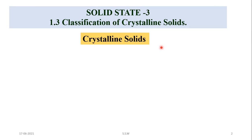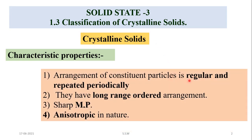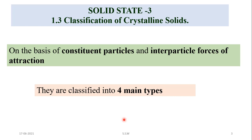Let us first review the characteristics of crystalline solids. Constituent particles in crystalline solids are atoms, ions, and molecules. The arrangement of these constituent particles is regular and repeated periodically. These crystalline solids have long-range order arrangement, they have a sharp melting point, and another important property is that these are anisotropic in nature.